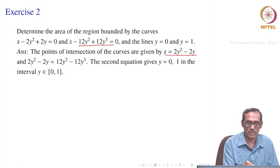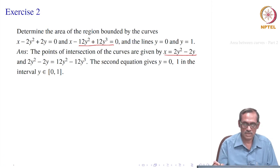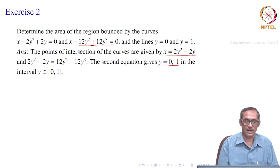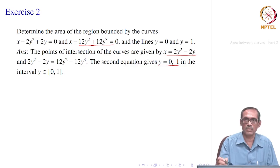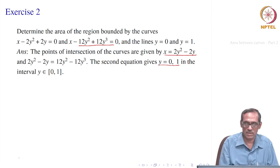Eliminating x, we get 2y² - 2y = 12y² - 12y³. Solving for y gives y = 0 or y = 1, since we only need solutions in the interval [0, 1]. Beyond that there can be other solutions, but we are not worried about those. So in the interval [0, 1], we have only two solutions: y = 0 and y = 1.